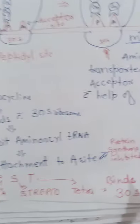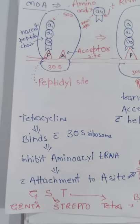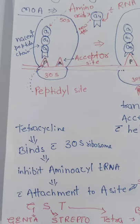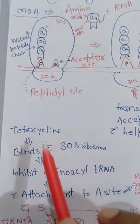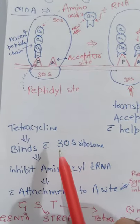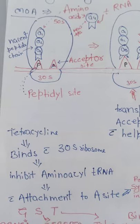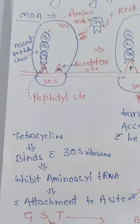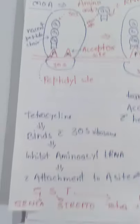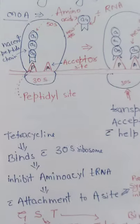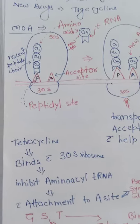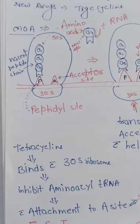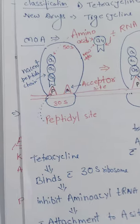Thus the mechanism of action of tetracycline is that it inhibits protein synthesis by binding with the 30S ribosome, and as a result production of new daughter bacterial cells is inhibited.